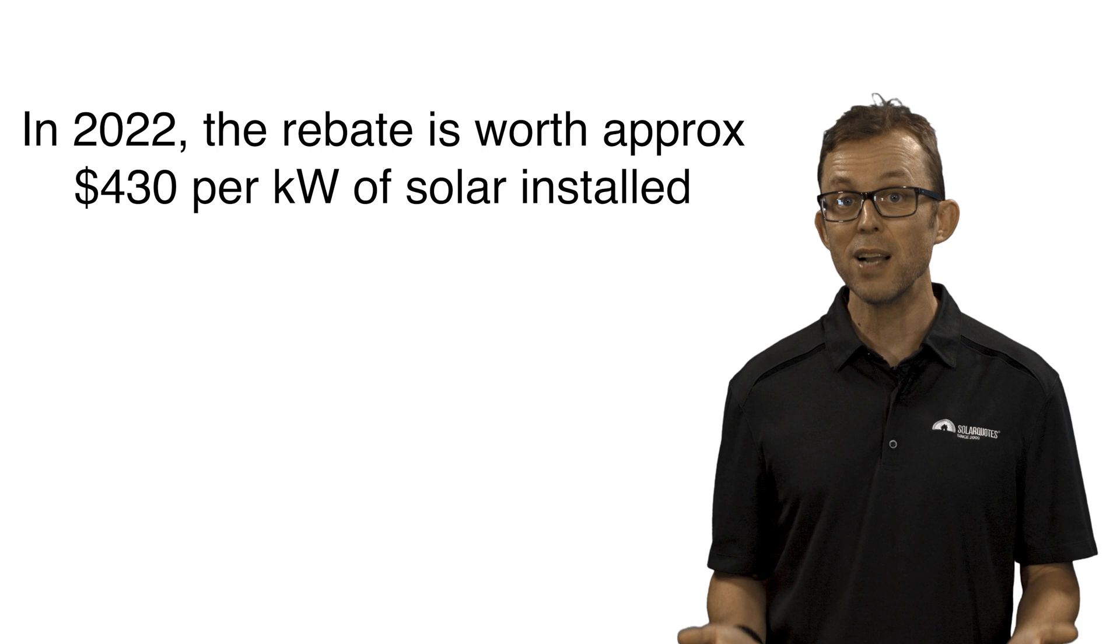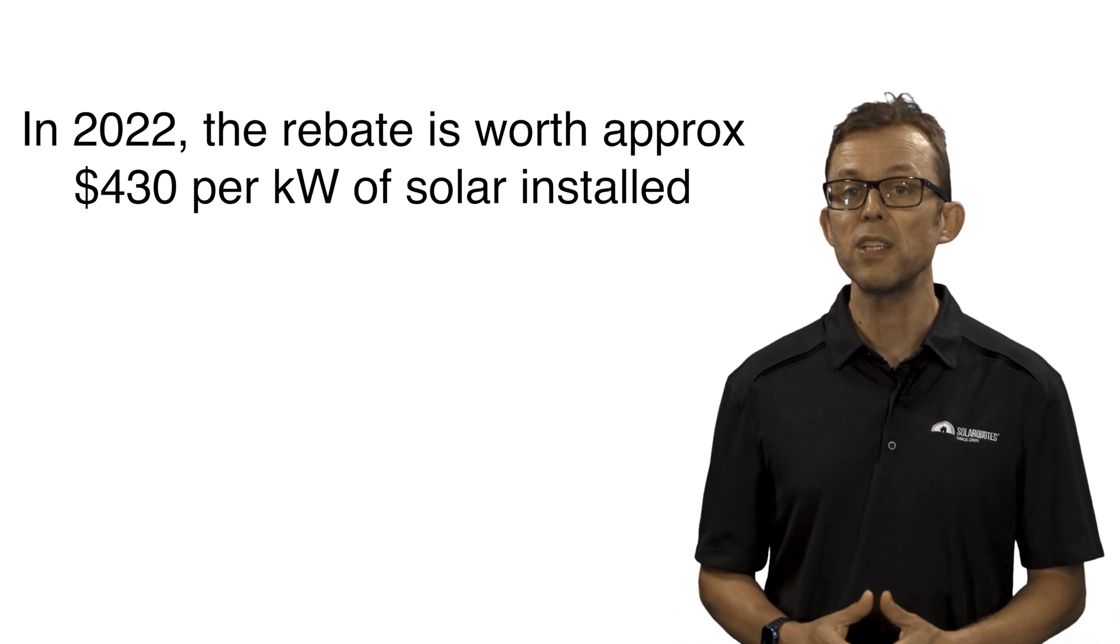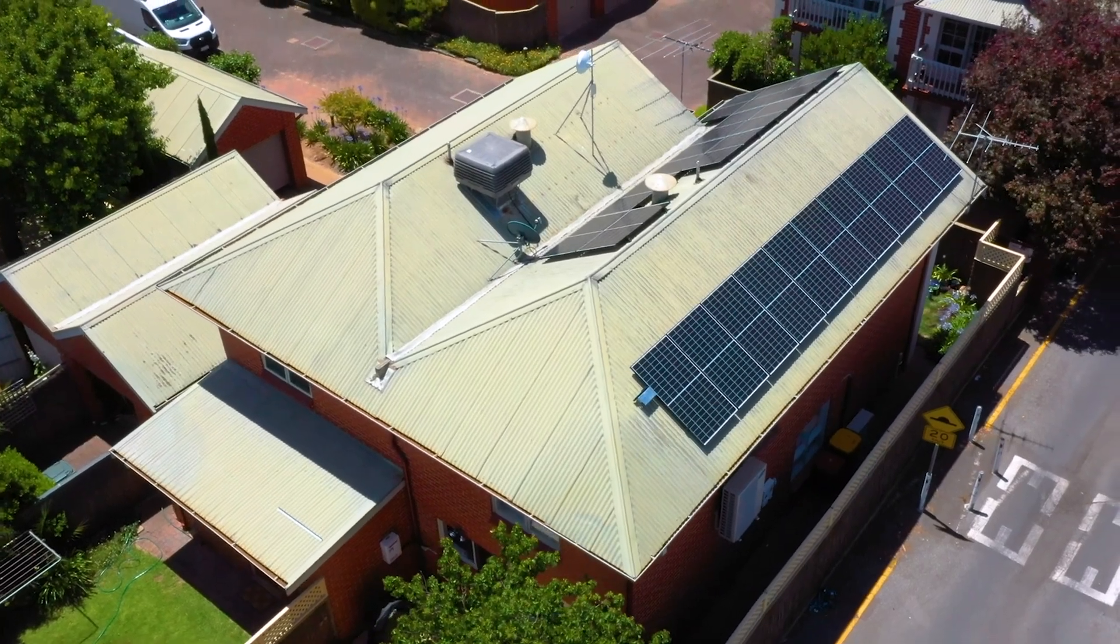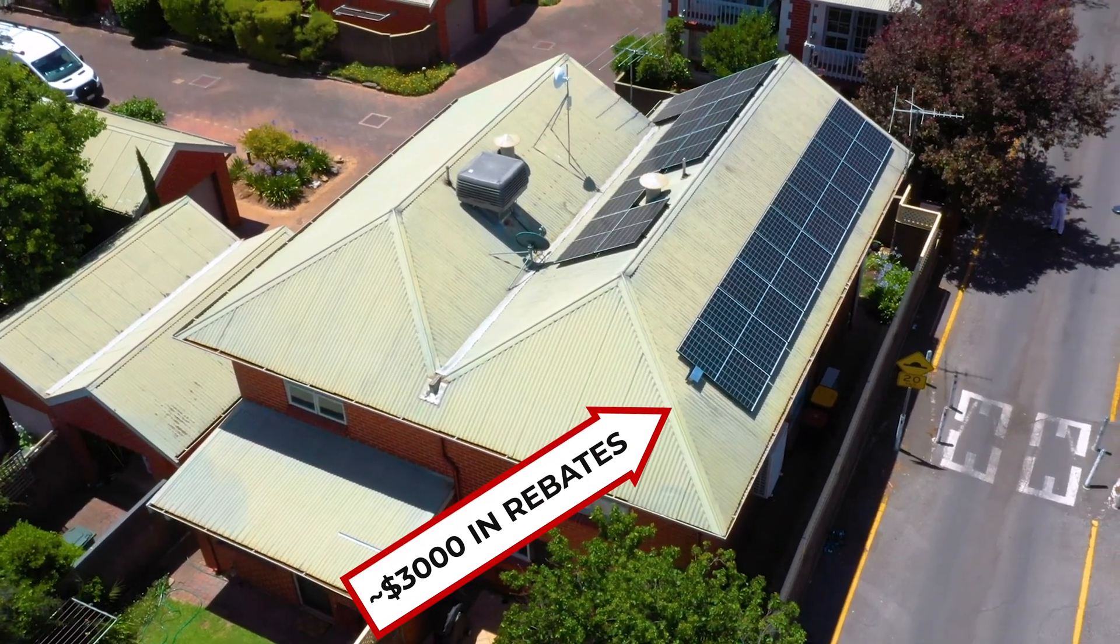The current value of STCs means that one kilowatt of solar on your roof attracts around $430 in rebates. To use an example, a 6.6 kilowatt system will give you about $3,000 in rebates.